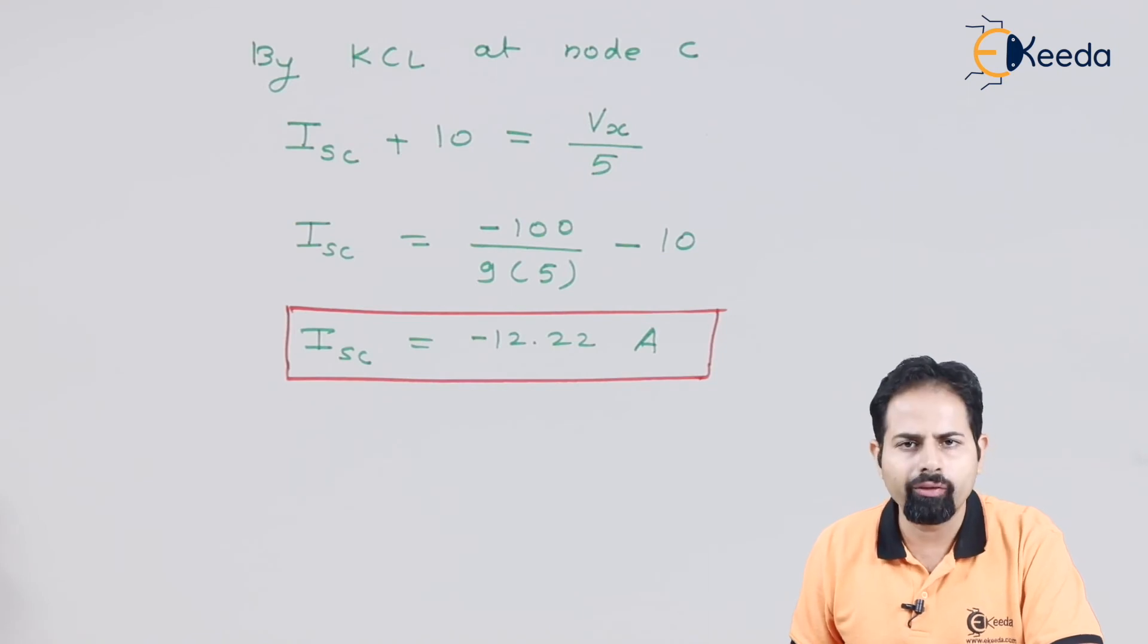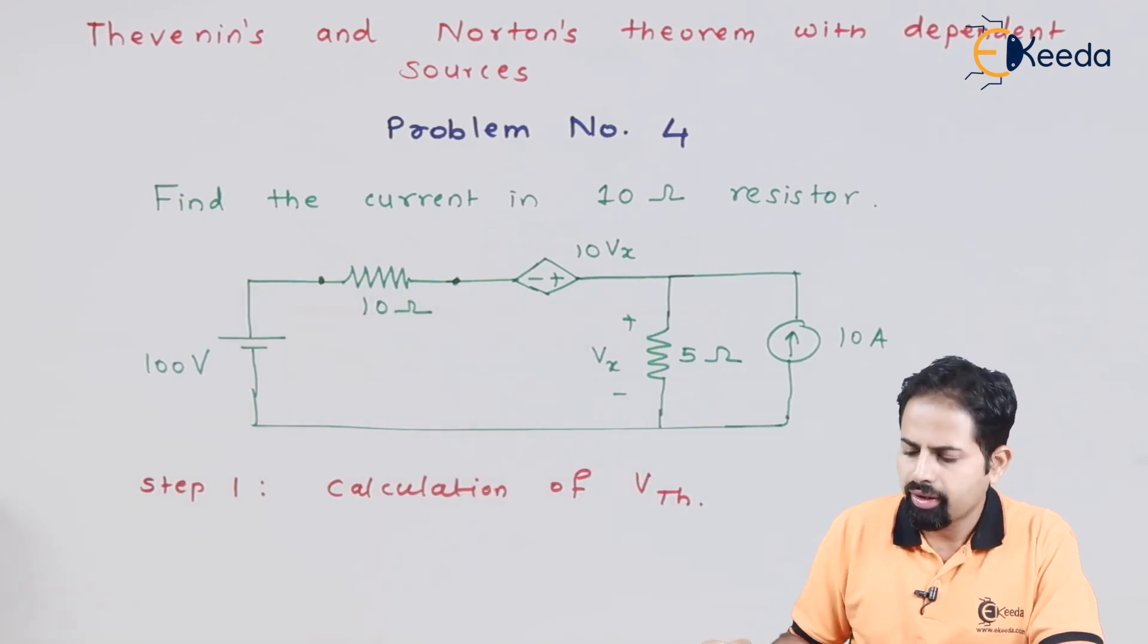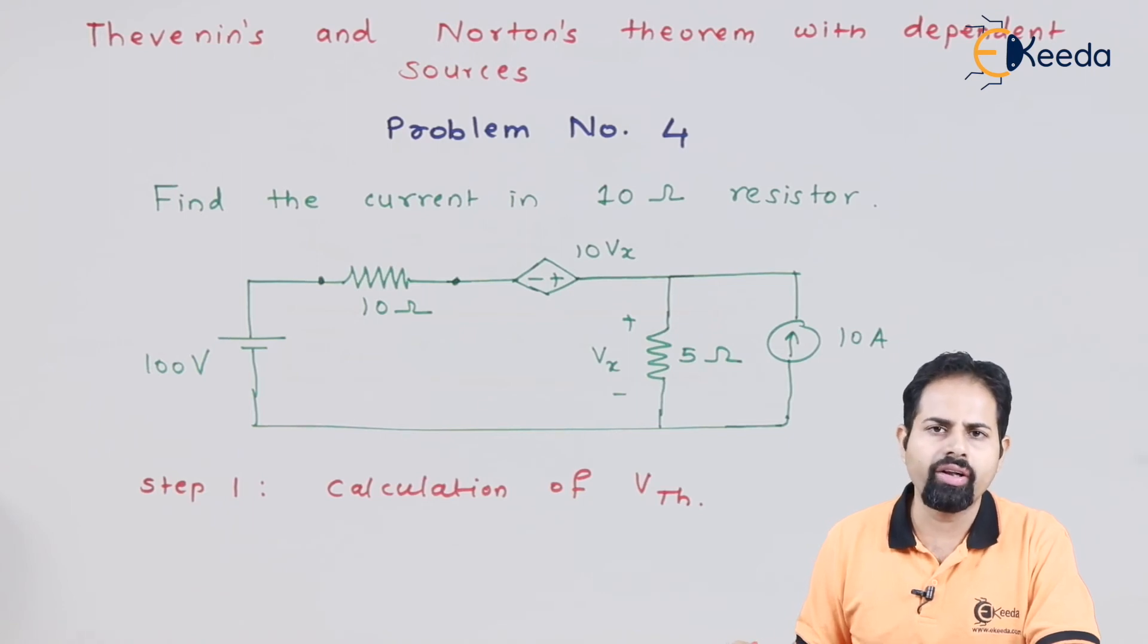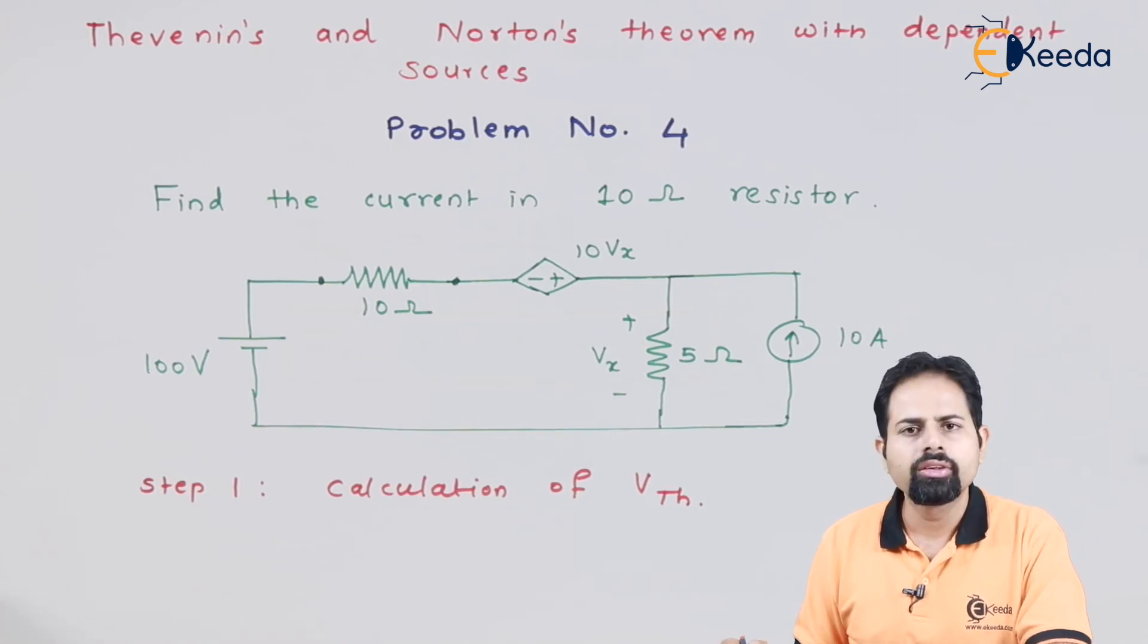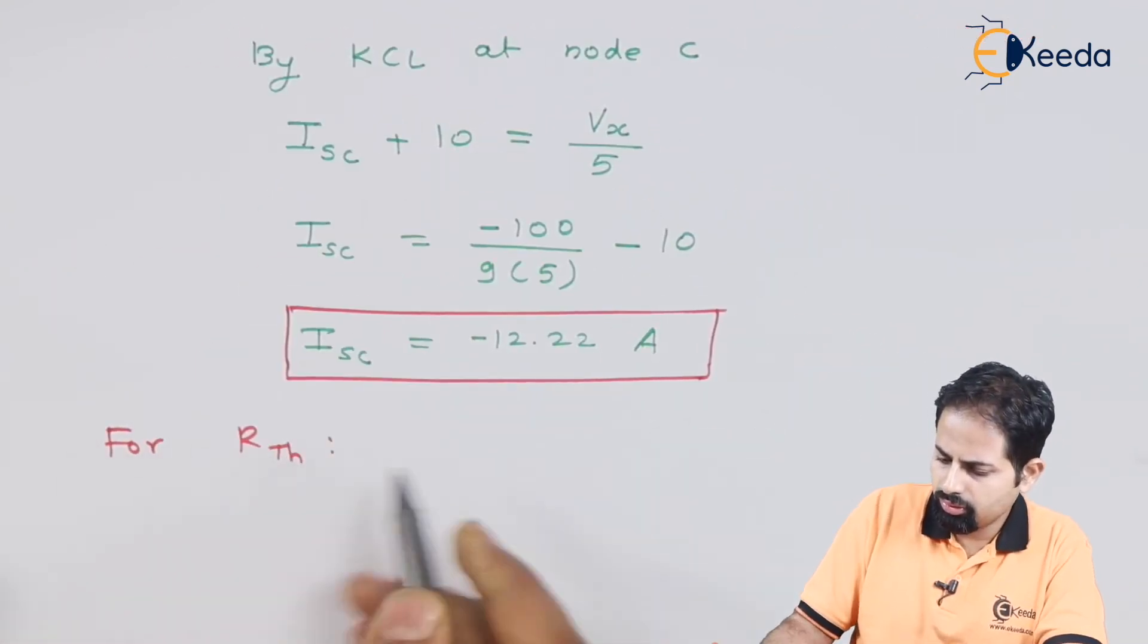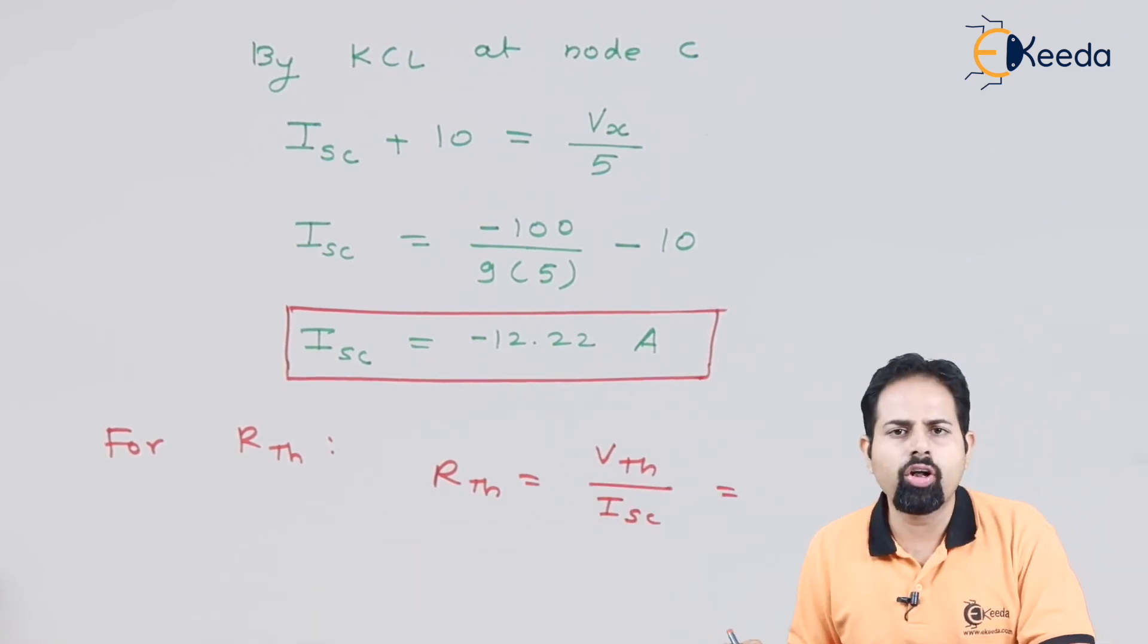So this is what ISC we got. Now let us go back to our question. Now the question is find the current in 10 ohm resistance. So for that, we have to draw this circuit as Thevenin's equivalent circuit with Vth and Rth. So Rth we have not got yet. So let us get, so let us get Rth.